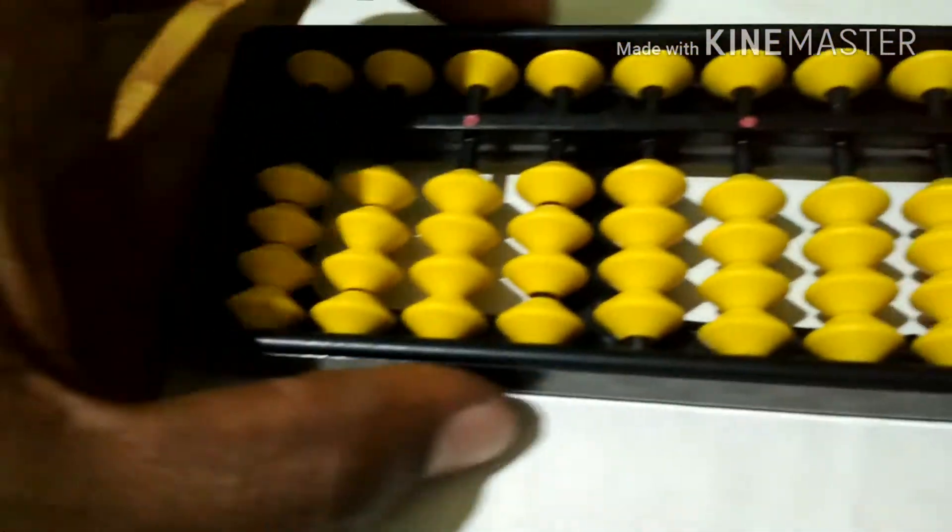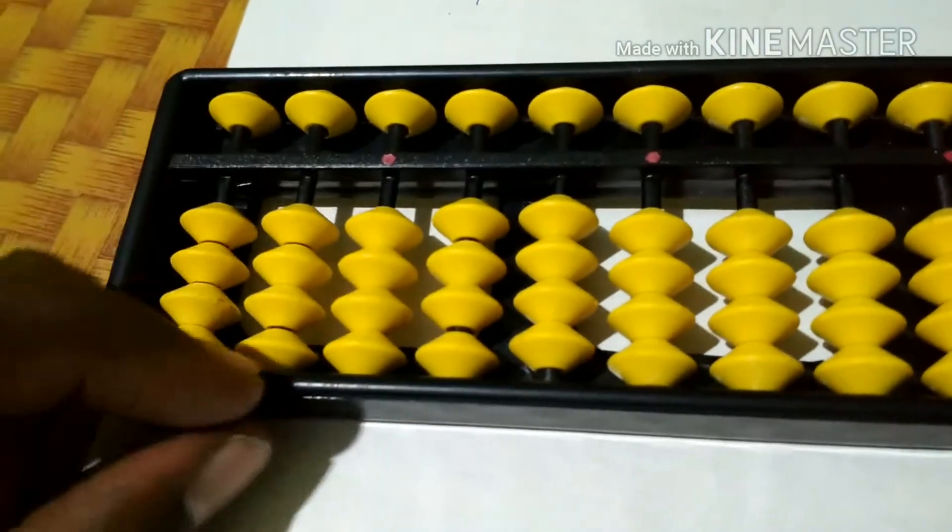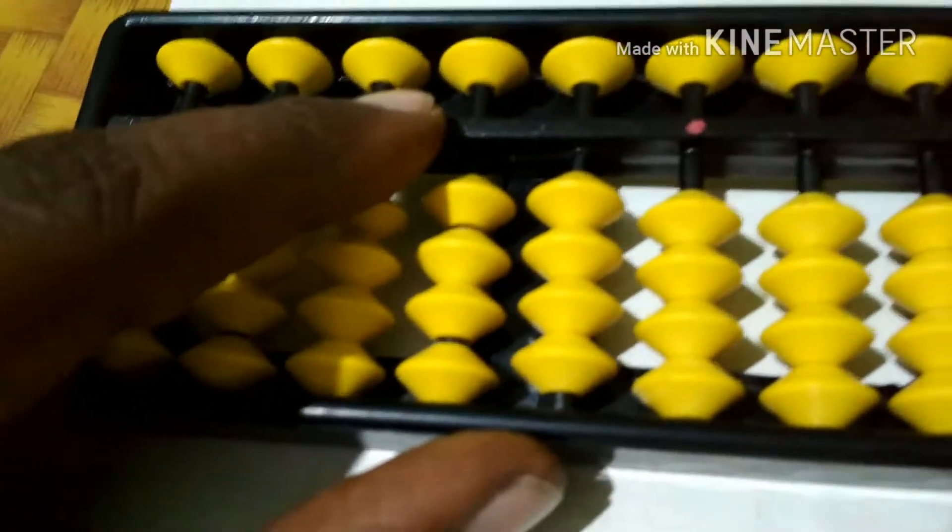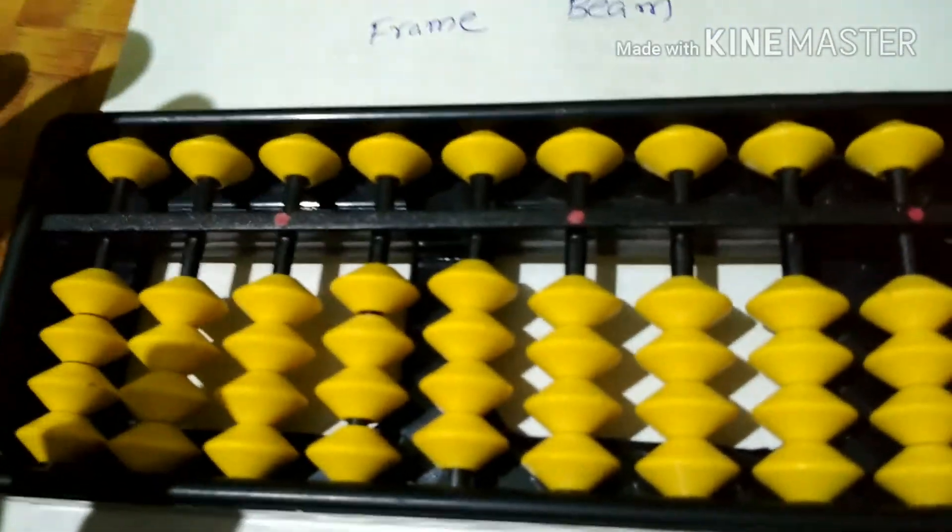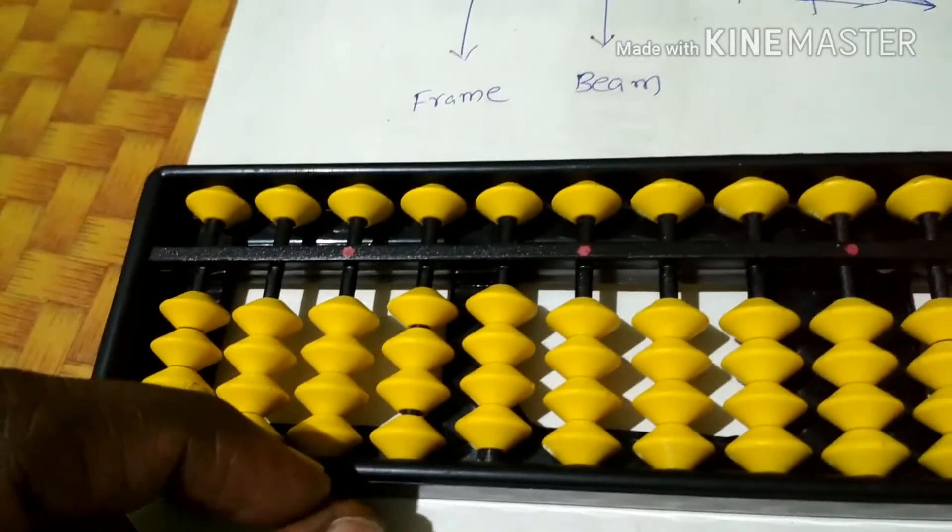So the first one is beam. This one is beam, and now the beads are on the rod. So here we count the numbers.